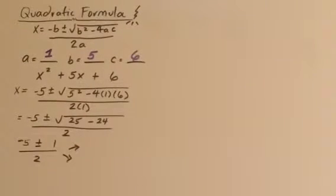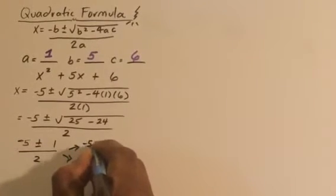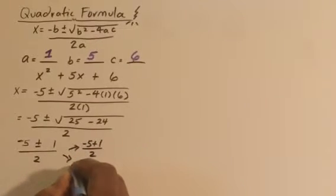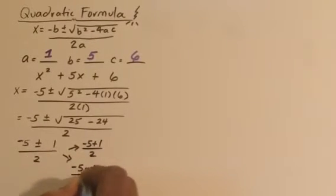We're going to get 2 answers, one for addition, and one for subtraction. So, minus 5 plus 1 divided by 2, and minus 5 minus 1 divided by 2.